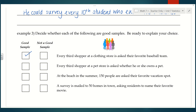For the second one: every third shopper at a pet store is asked whether he or she owns a pet. I think that is not a good sample, because chances are if that shopper is in a pet store, they probably own a pet — or they're maybe getting one. So that seems a little biased.